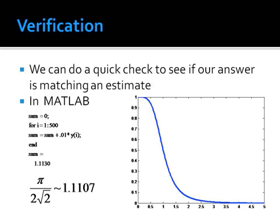Let's just do a quick check to see if our answer makes sense at all. I did a quick graph of the function here in MATLAB, just from 0 to 5, because it decays pretty fast. So I just did a really quick left-hand sum, and I get about 1.113 as my sum, which is really close to the 1.1107, that is pi over 2 root 2. So our answer does make a lot of sense.